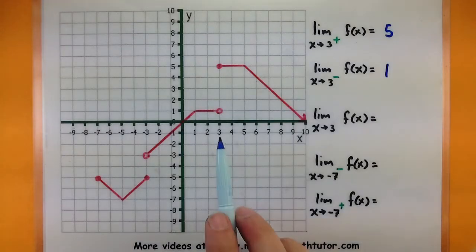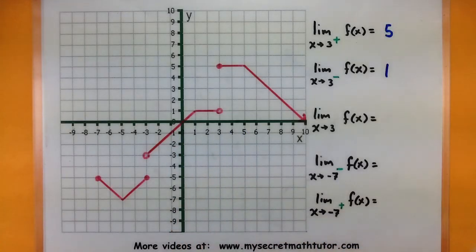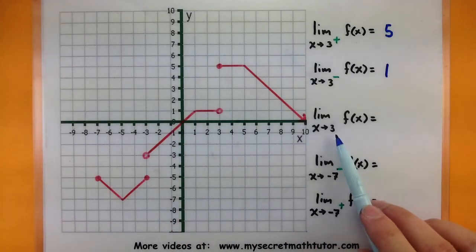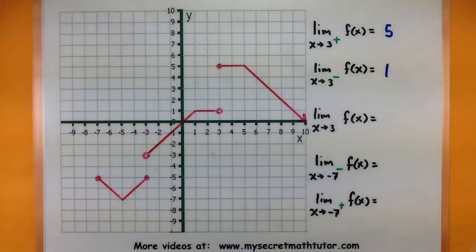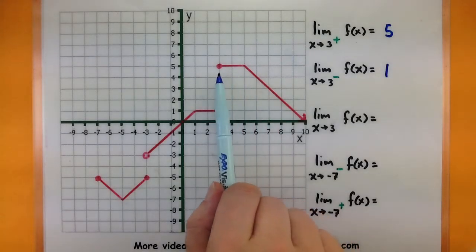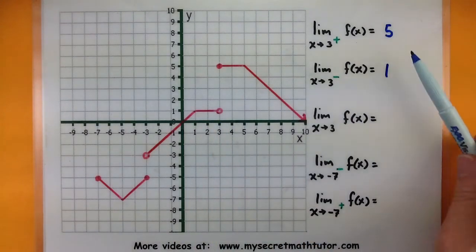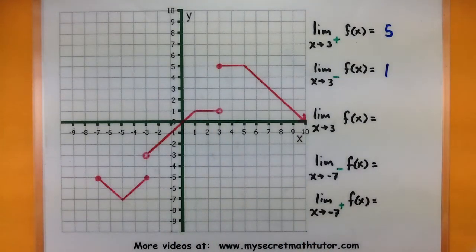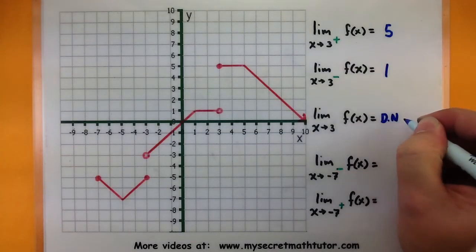Now one thing to keep in mind is that when you're doing a regular limit, you're essentially checking the right and the left-sided limits to see if you get the same value. In this third example, notice how there's no little symbol indicating which side I should be approaching — that's my clue that this is just a regular everyday limit. So I need to make sure that the right-handed limit and the left-handed limit are the same. We've already computed these and we can see that they're not the same, so we can say that the limit at 3 does not exist.